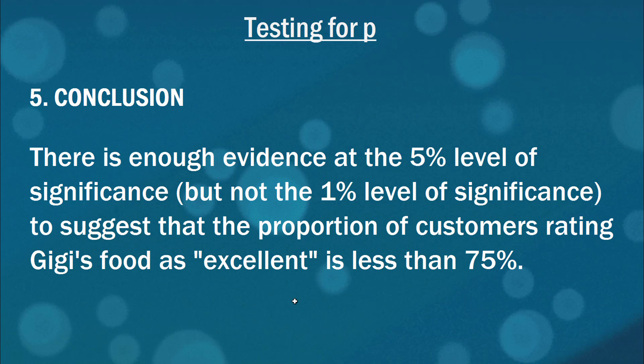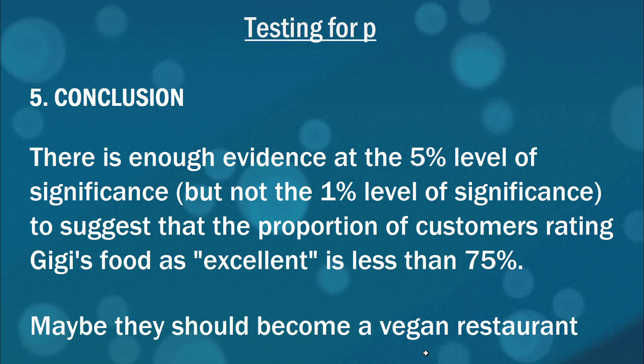So our conclusion then is that there's enough evidence at the 5% level of significance, but not at the 1% level to suggest that the proportion of customers rating Gigi's food as excellent is less than 75%. Maybe they should become a vegan restaurant and see if that improves people's opinion. But there you have it. There is testing for the population proportion p.